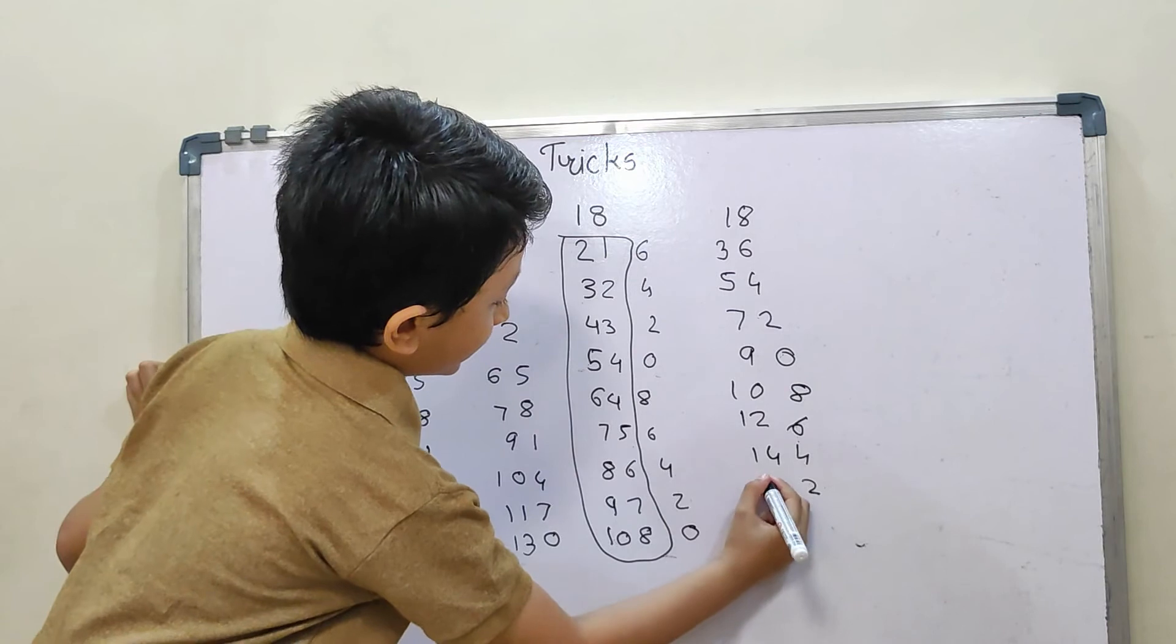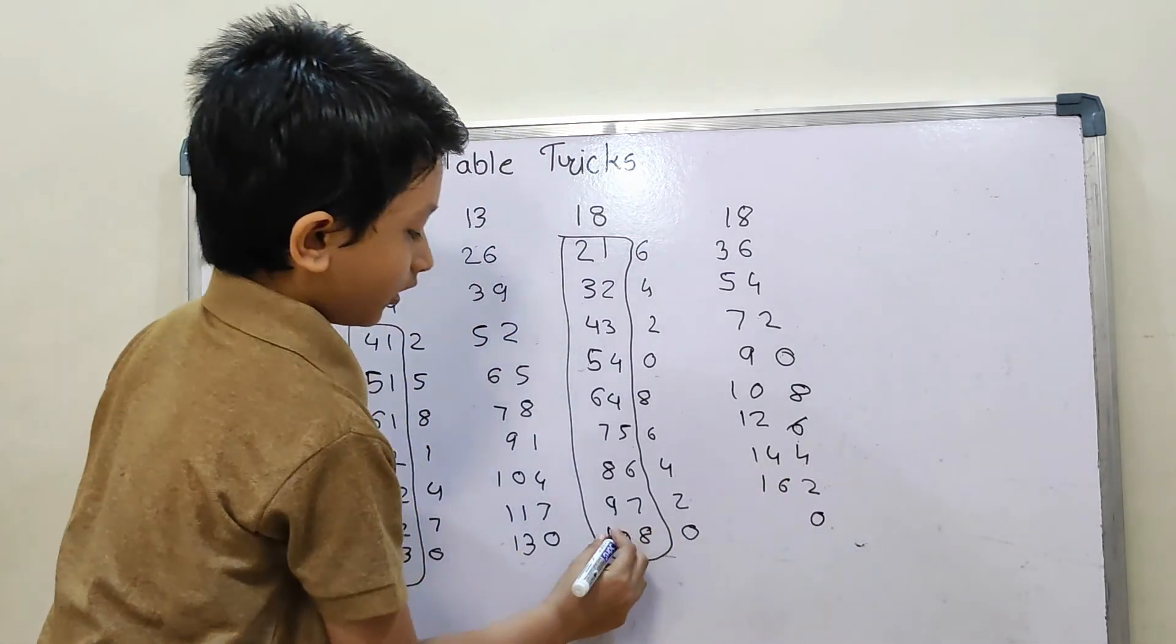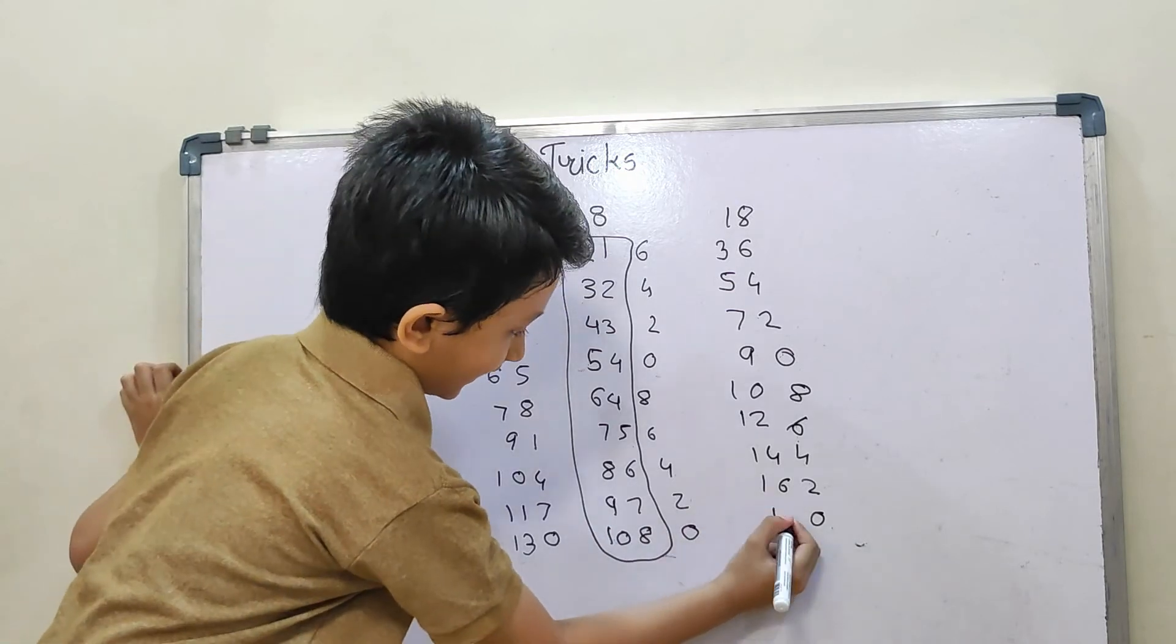And 9 plus 7 equals 16, and then we have 0 as it is, 10 plus 8 equals 18.